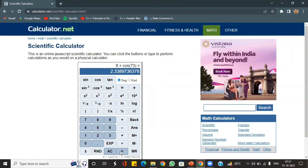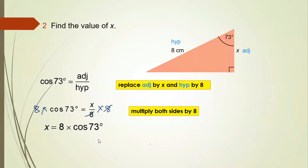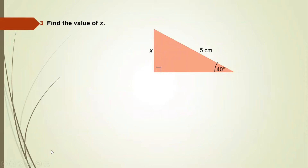We are asked to write up to 3 significant figures. The full value is 2.338, so up to 3 significant figures we get x = 2.34.